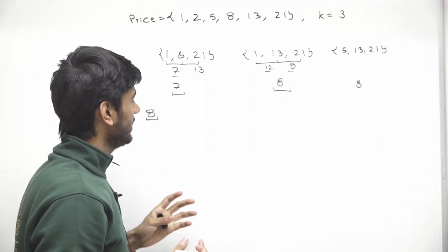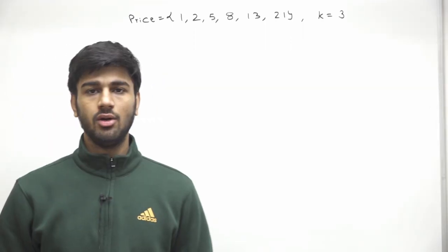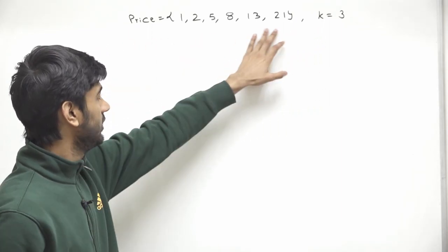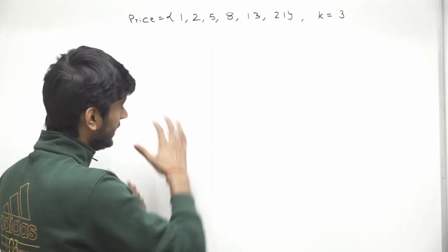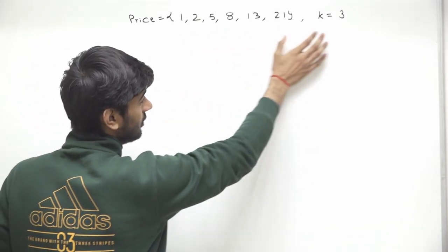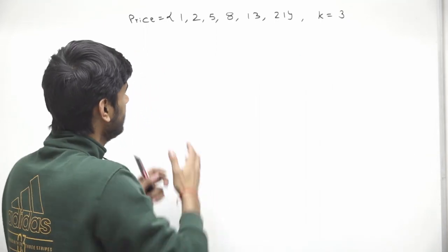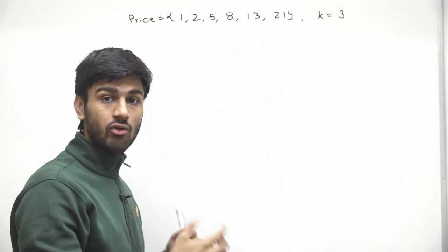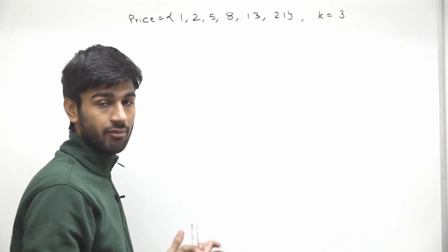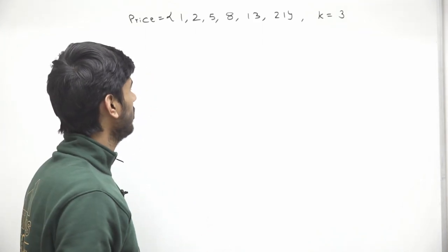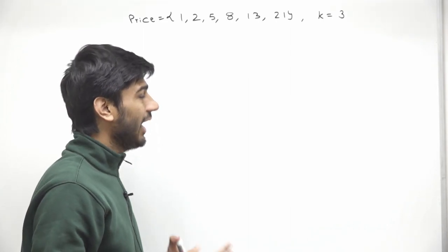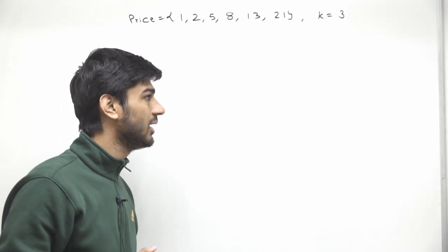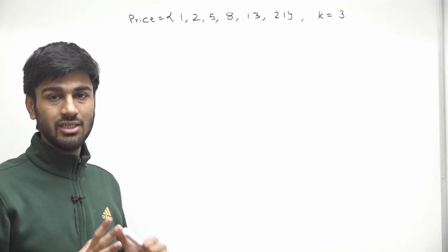If the problem statement is clear, we can think of a solution. We need to pick k elements from the array, so we could consider all subsets of size k and find which has maximum tastiness — thinking in terms of recursion and potentially optimizing with DP. But there is one very interesting observation in this problem.